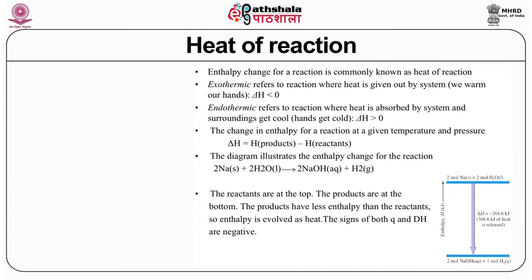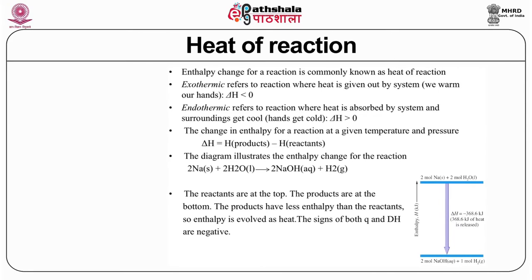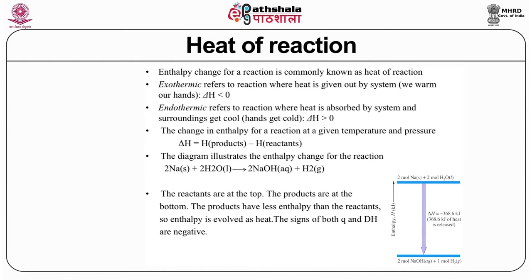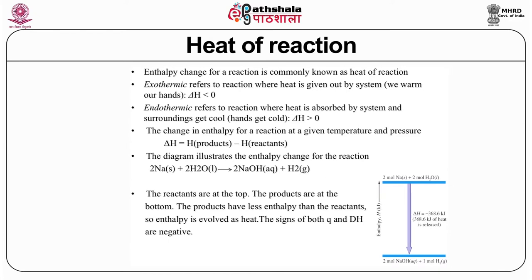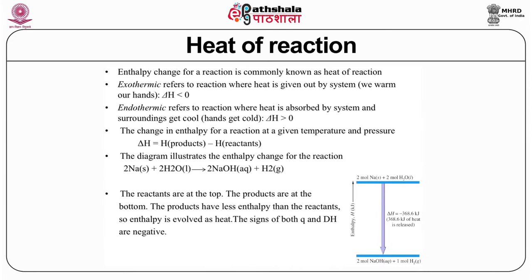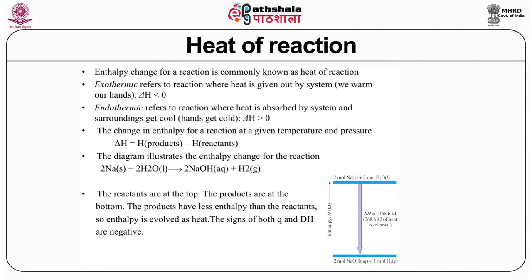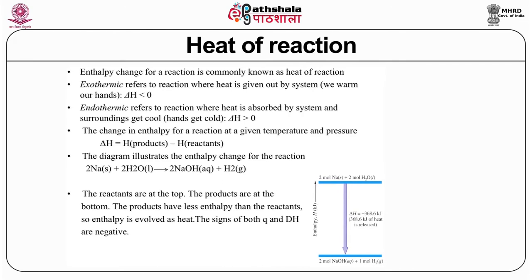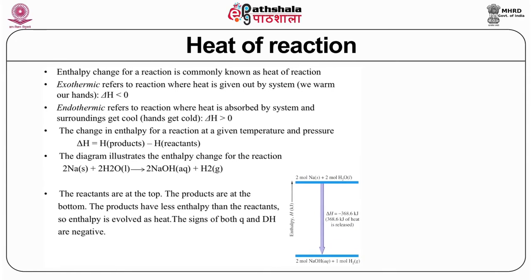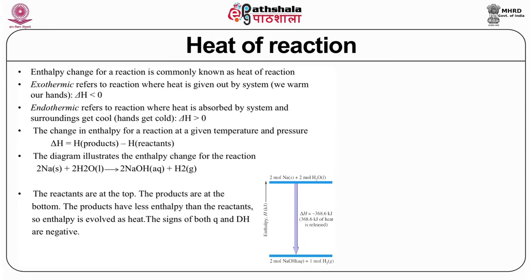The enthalpy change of a reaction is commonly known as heat of reaction. Exothermic reactions have Q or delta H less than 0, and delta H equals heat of the products minus the heat of the reactants. An example: when sodium is added to water, delta H is minus 368.6 kilojoules, meaning that much heat has been released. The products have less enthalpy than the reactants, so enthalpy is evolved as heat and the signs of both Q and delta H are negative.